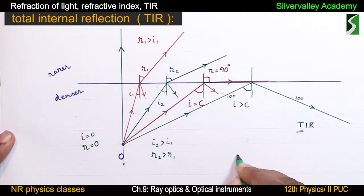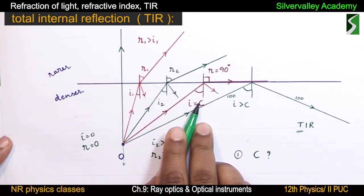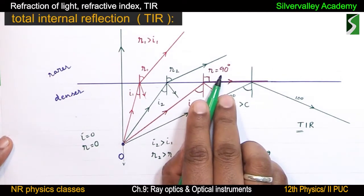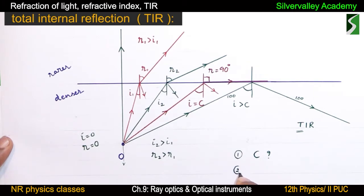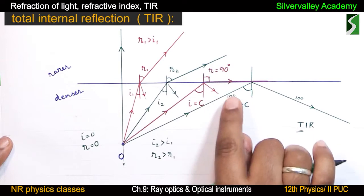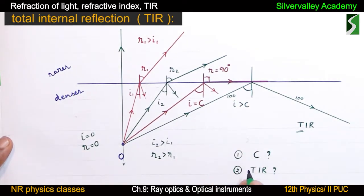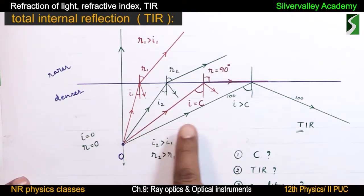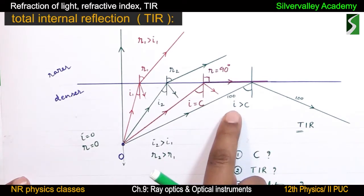For exam questions: What is critical angle? — Critical angle is that angle of incidence in the denser medium where the angle of refraction is equal to 90 degrees. What is TIR? — It is the phenomenon in which a ray of light is totally internally reflected when it travels from denser medium to rarer medium and the angle of incidence is greater than the critical angle. Conditions for TIR: (1) Light ray should travel from denser medium to rarer medium. (2) The angle of incidence should be greater than the critical angle.